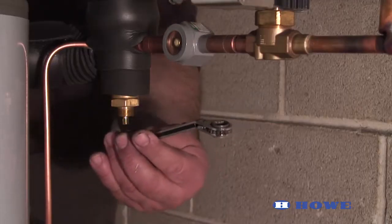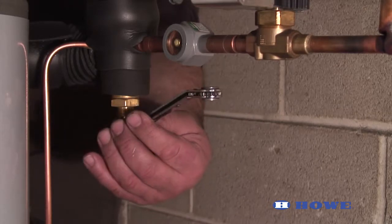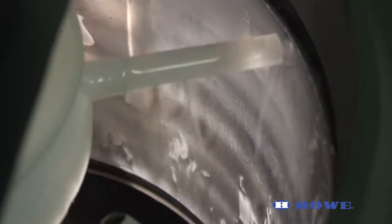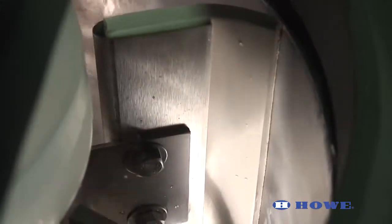If the expansion valve is open too far, liquid may flood back to the accumulator on your refrigeration rack or condensing unit. If this is happening, close the expansion valve a quarter turn at a time until you see ice being left on the lower section of the evaporator.